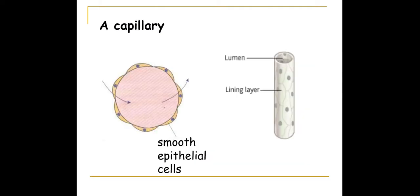Capillaries are one cell thick and made up of squamous epithelial cells. They're very smooth to prevent any friction between the blood and the capillary wall. Being one cell thick is fantastic for diffusion, providing a short diffusion distance between the capillaries and the tissue. There are also small gaps between the squamous epithelial cells called fenestrations, which are ideal for the passage of substances in and out of the blood.